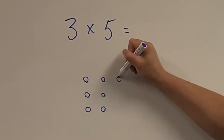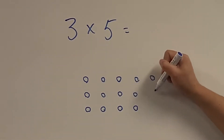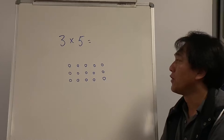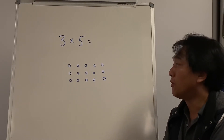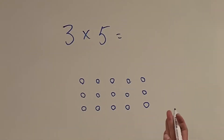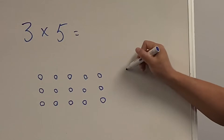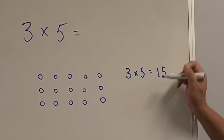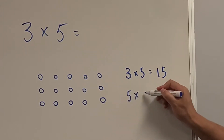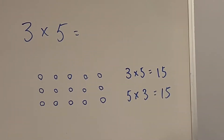It's called the array. So this is 3 rows of 5 dots. Or you can say 5 columns of 3 dots. Looking at this, I can write 2 multiplication number sentences.